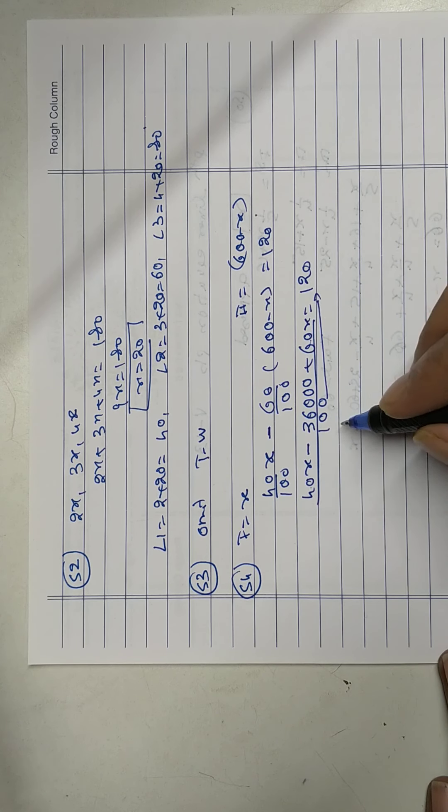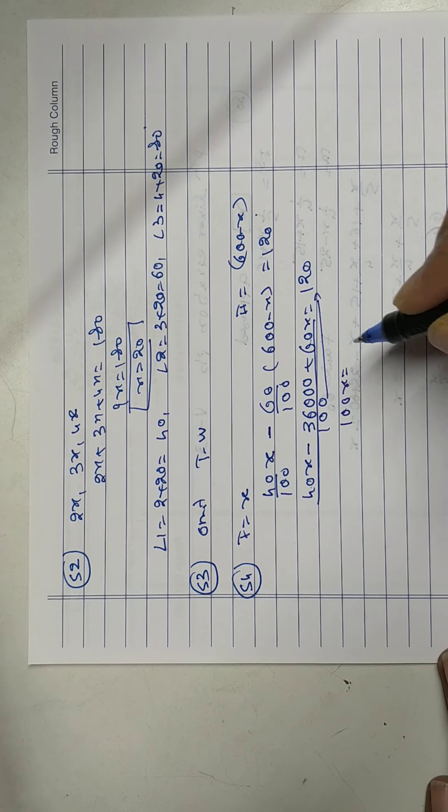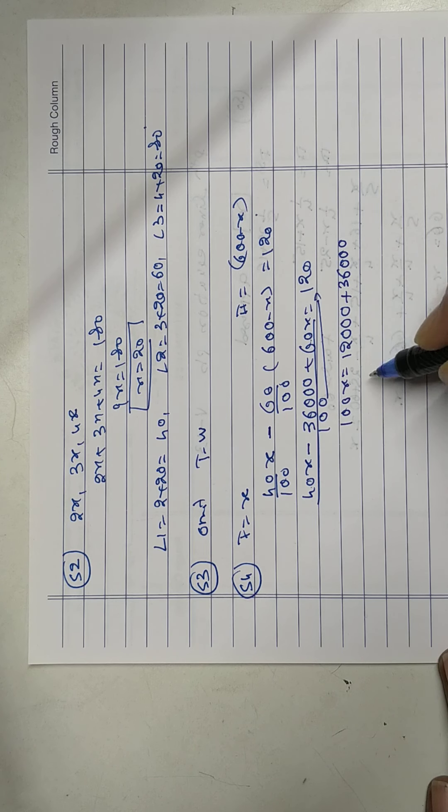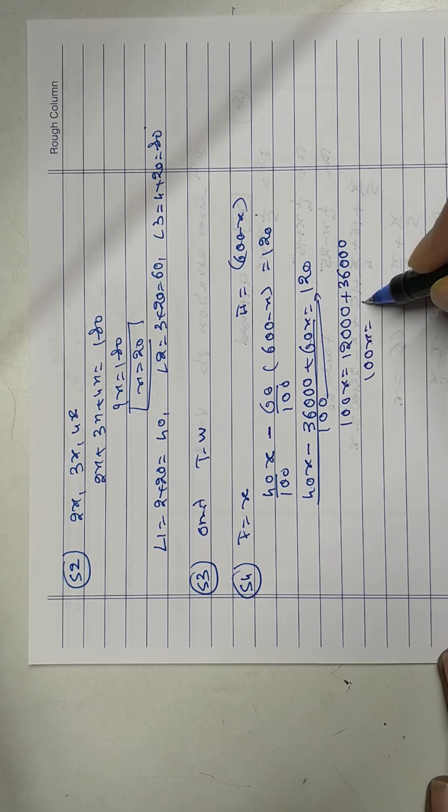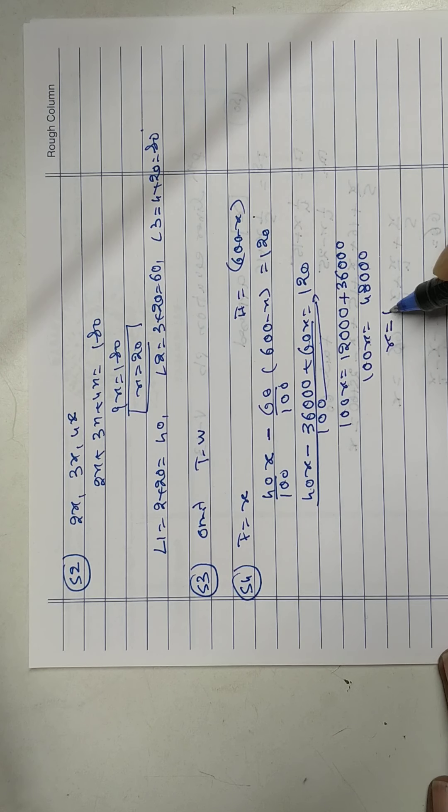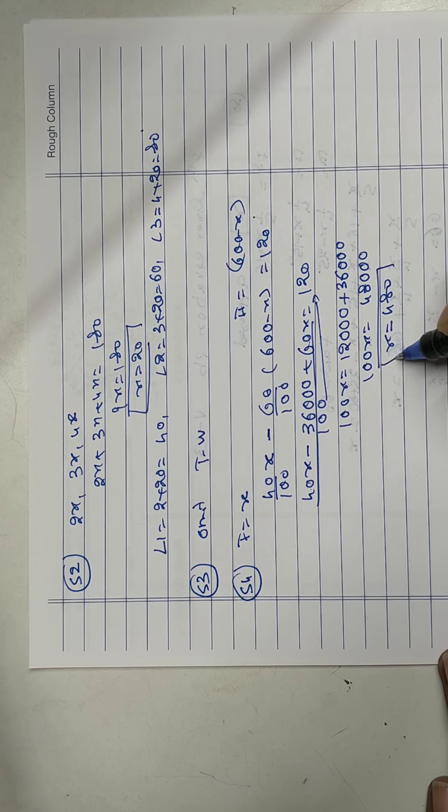100 multiplied there. 60 plus 40. 100x equals to. Plus when 36,000 go that side. 100x equals to 48,000. X equals to 480.